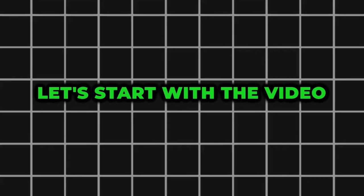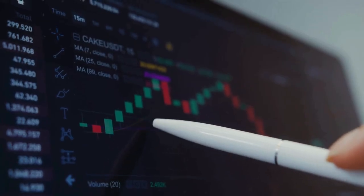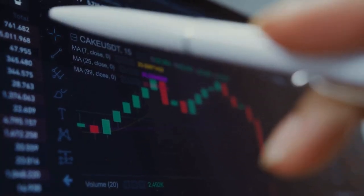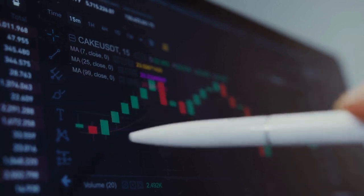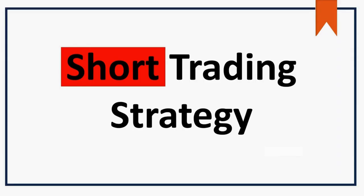Let's start and understand the short trading strategy. When the market is in an uptrend, you can simply buy a stock — maybe on a breakout, a moving average support, or a moving average crossover. In an uptrend, we buy the stock to enter the trade and sell it to exit. Opposite to this is short trading, wherein we first sell the stock and afterwards we buy it.